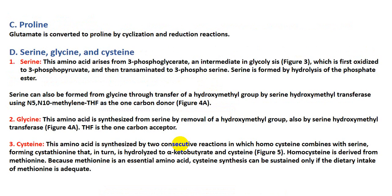The amino acid proline is synthesized from glutamate. Glutamate is converted to proline by cyclization and reduction reactions.